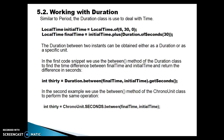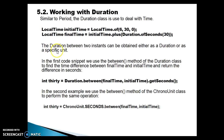Similar to Period, the Duration class is used to deal with time. In the code snippet on screen, I have created an instance of LocalTime using the factory method called 'of', passing the number of hours, minutes, and seconds — basically 6:30 AM. This is assumed as the initial time, and the final time is calculated by adding a duration of 30 seconds to the initial time.